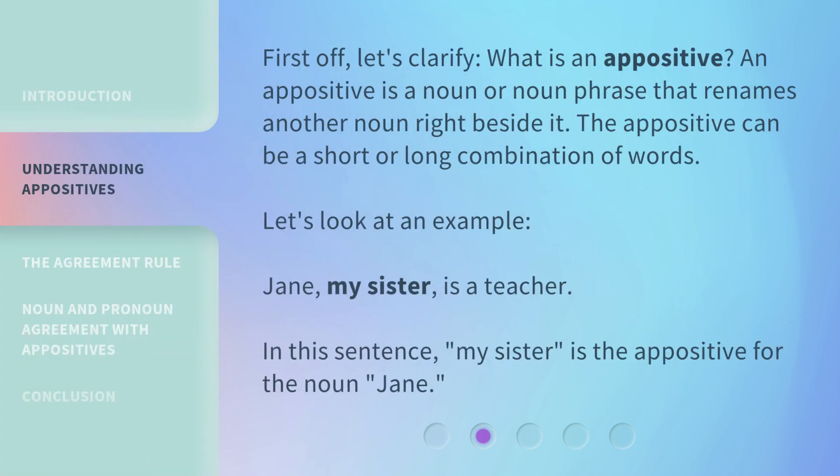First off, let's clarify: what is an appositive? An appositive is a noun or noun phrase that renames another noun right beside it. The appositive can be a short or long combination of words. Let's look at an example: 'Jane, my sister, is a teacher.' In this sentence, 'my sister' is the appositive for the noun 'Jane.'